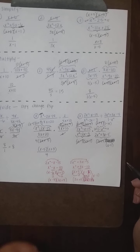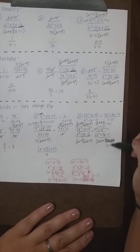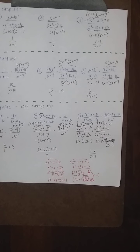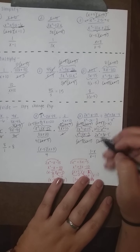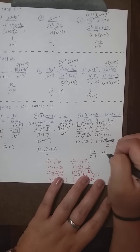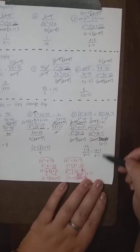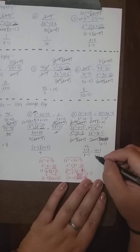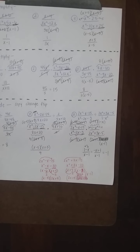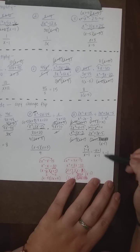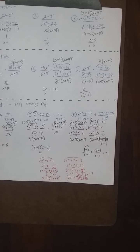With subtraction, order matters — 2 − 3 is different from 3 − 2. So (1 − x) over (x − 1) doesn't cancel the normal way. Rewrite (1 − x) as (−x + 1): this gives −(x − 1) over (x − 1), which simplifies to −1. Anytime you have the same expression on top and bottom but with reversed subtraction order, it cancels to negative 1. Summary: to simplify, cancel top and bottom. To multiply, cancel across either fraction. To divide, copy-change-flip first, then cancel.